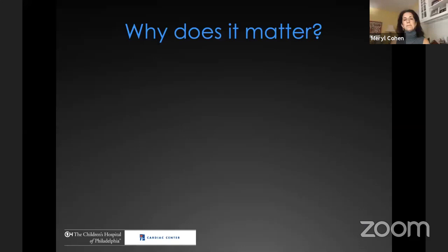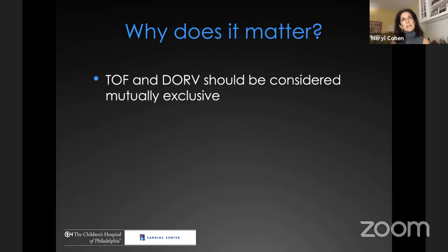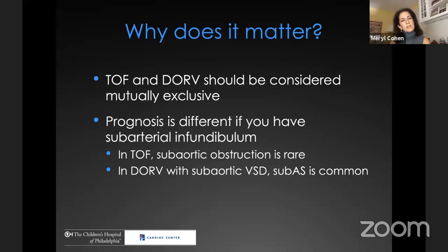The reason we make the distinction of mitral-to-aortic fibrous continuity using the Van Prague method is particularly in the case of double outlet right ventricle versus tetralogy of Fallot. In the Van Prague method, these two lesions should be considered mutually exclusive, because the prognosis is quite different if you have a sub-arterial infundibulum. In tetralogy of Fallot, sub-aortic obstruction is very rare. But in double outlet right ventricle with a sub-aortic VSD, sub-aortic obstruction is a common feature.